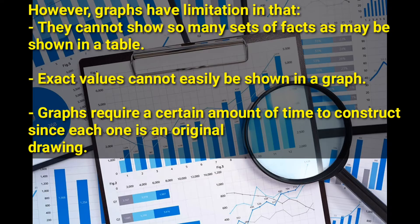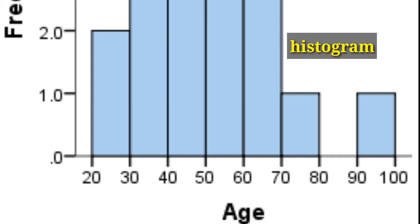The first graph we have is a histogram. It is drawn using the frequency distribution table with class and frequency. For the histogram, the bars are joined or connected to each other.